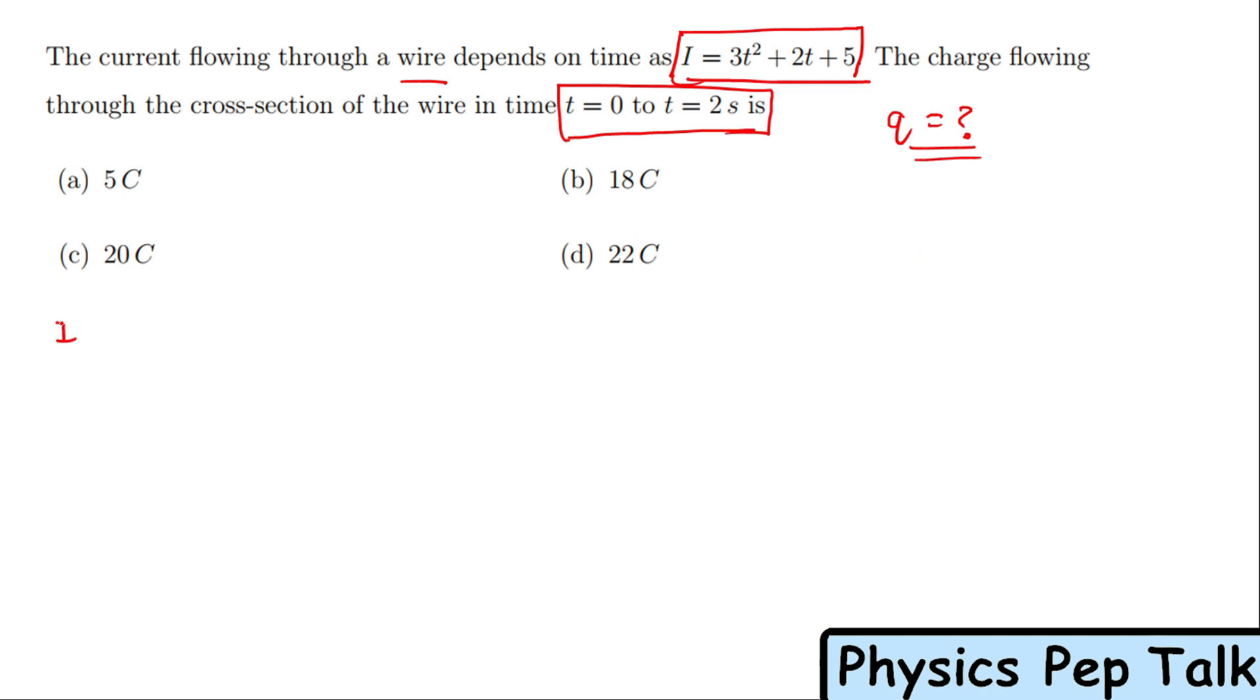We know that current i is defined as the rate of flow of charges within a conductor, that is dq/dt. So this implies that dq is equal to i dt. If we know the rate of flow of charge, we can get the complete charge by integrating on both sides.